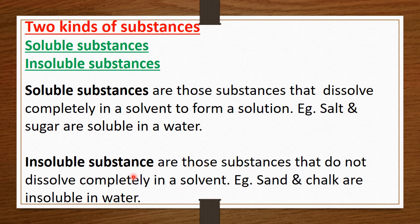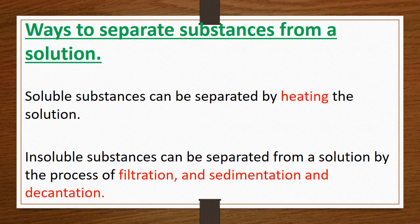Insoluble substances are those substances that do not dissolve completely in a solvent. For example, sand and chalk — these do not dissolve in water, that's why they are called insoluble substances. Now let us understand some ways to separate substances from a solution. Soluble substances can be separated from a solution — let's look at the ways.